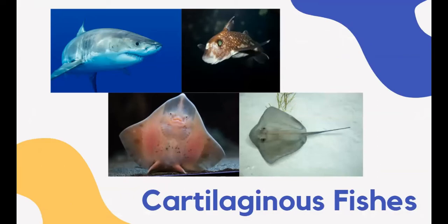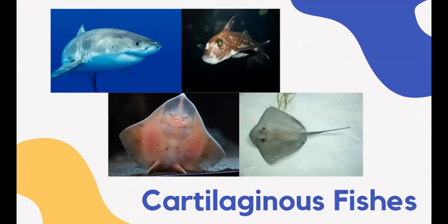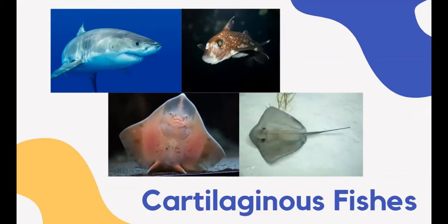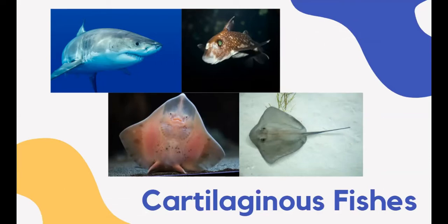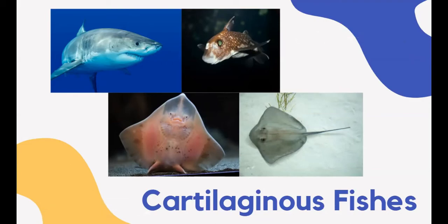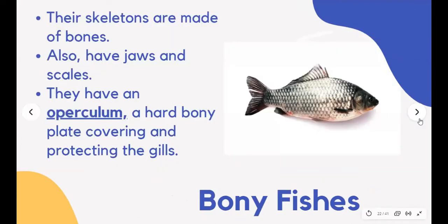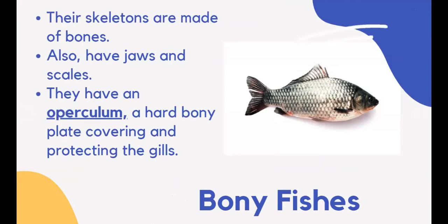Cartilaginous fishes have skeletons made of cartilage rather than bone. They have jaws and tough scales. They breathe through spiracles on top of their heads, which allows them to rest on the bottom of the ocean without breathing in sand. Examples include sharks, ratfish, skates, and stingrays. Bony fishes have skeletons made of bones, as well as jaws and scales. They have an operculum, a hard bony plate covering and protecting the gills.